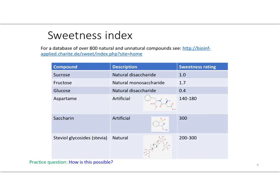Most of us love sweet-tasting foods, and hence sweets and desserts are a major contributor to the obesity epidemic. This table shows the sweetness index of many natural as well as artificial sweeteners. Note that this index is based around sucrose, or cane sugar. Fructose is sweeter than sucrose, and glucose is not as sweet.